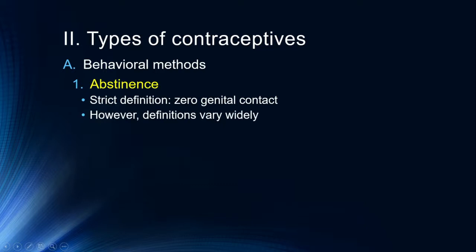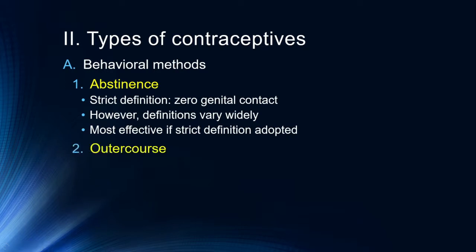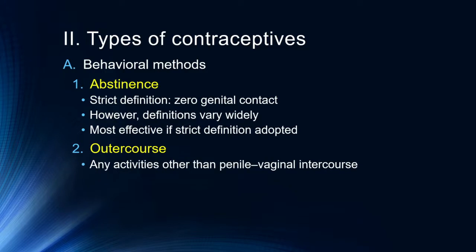Definitions tend to vary widely. We got into some of this discussion back in the 90s during the Clinton administration about what 'sexual relations' meant. This method is only effective if the strict definition is adopted — no sex is no sex. There are 'abstinence light' versions, or outercourse, which are things that do not include penile-vaginal intercourse. Importantly, sexually transmitted infections are still possible through some of these methods.